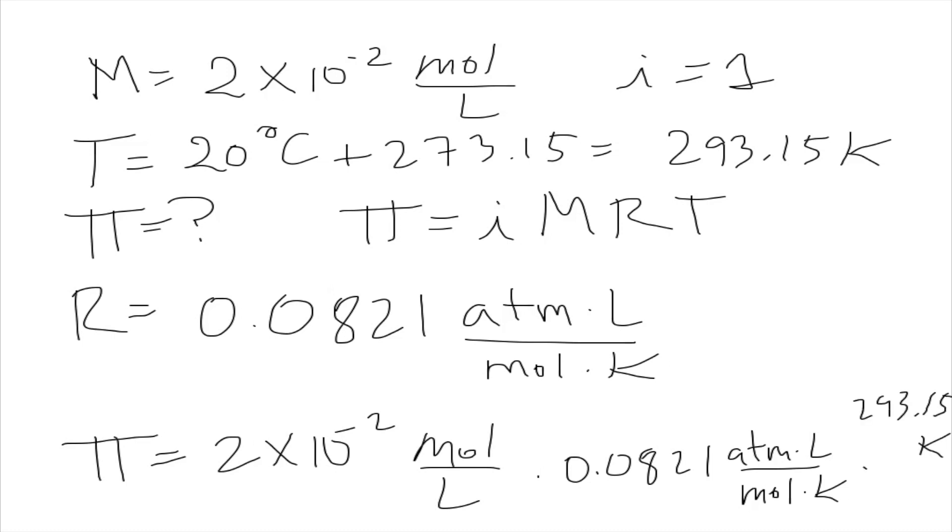Let's check our units. Mols cancel out with mol, liters cancel out with liters, Kelvin with Kelvin, and our pressure is going to be in atmospheres, which makes sense. The result is simply π = 0.48 atmospheres. So this is a simple problem, you just have to plug in all the values. Now let's do something a little bit more challenging.